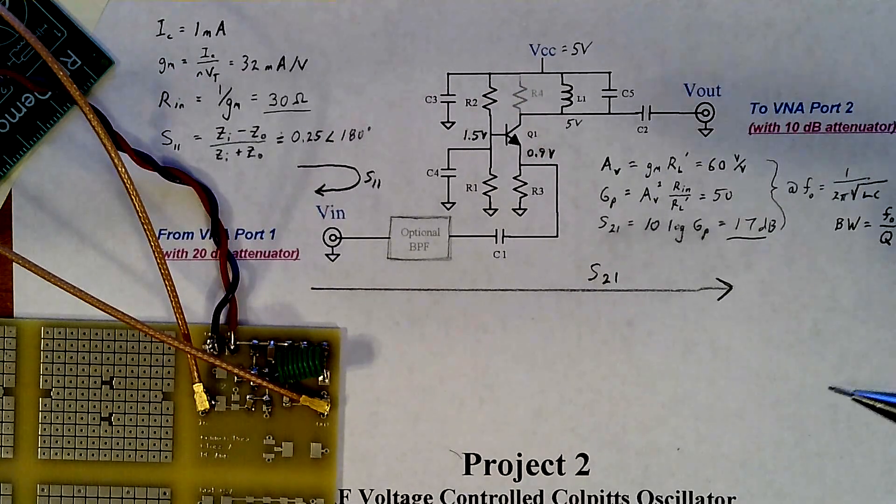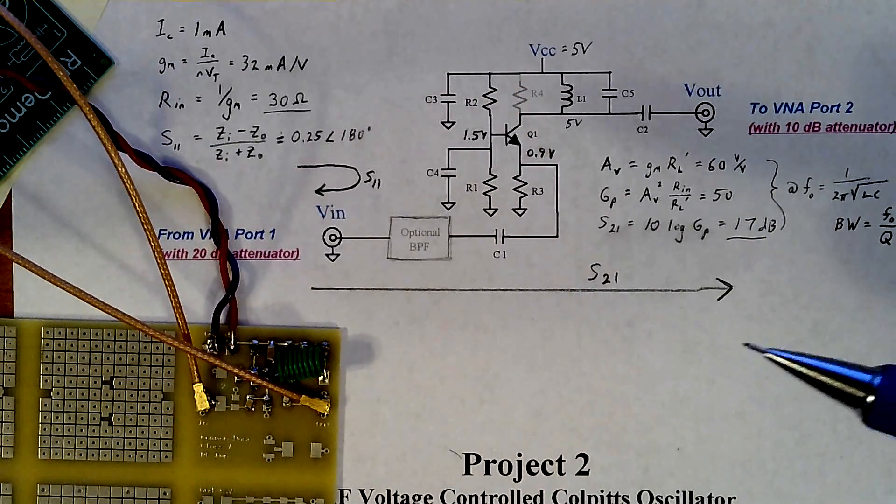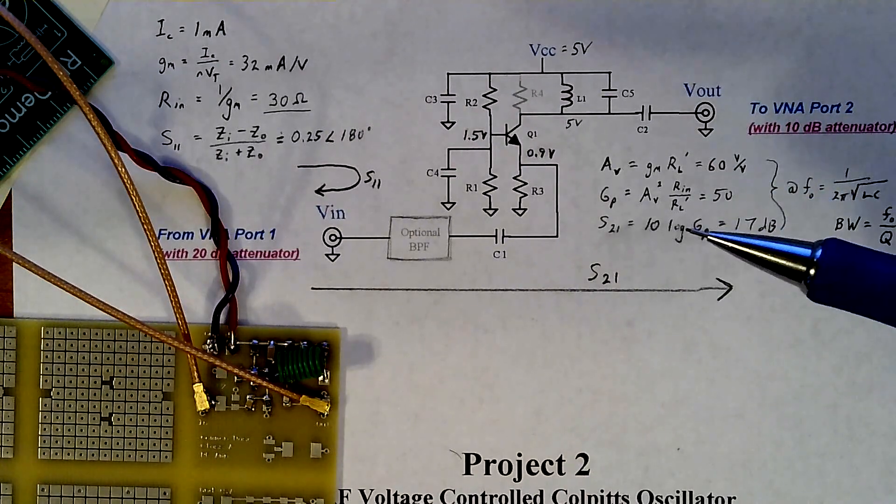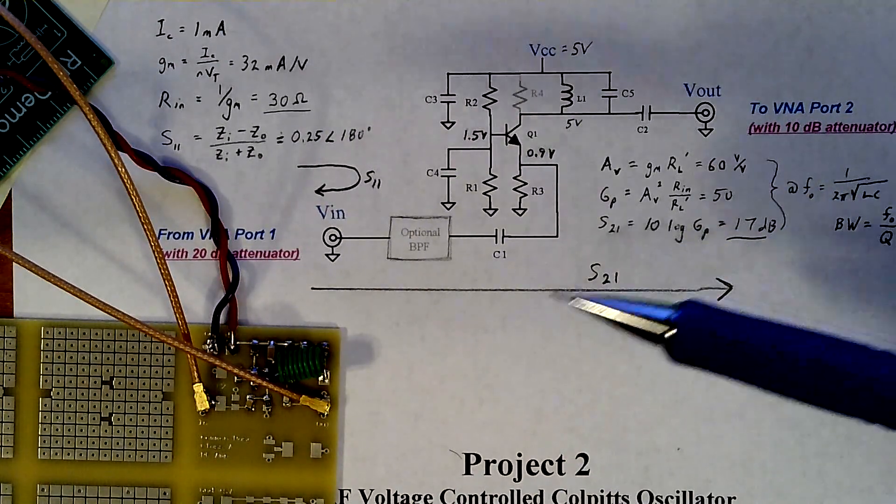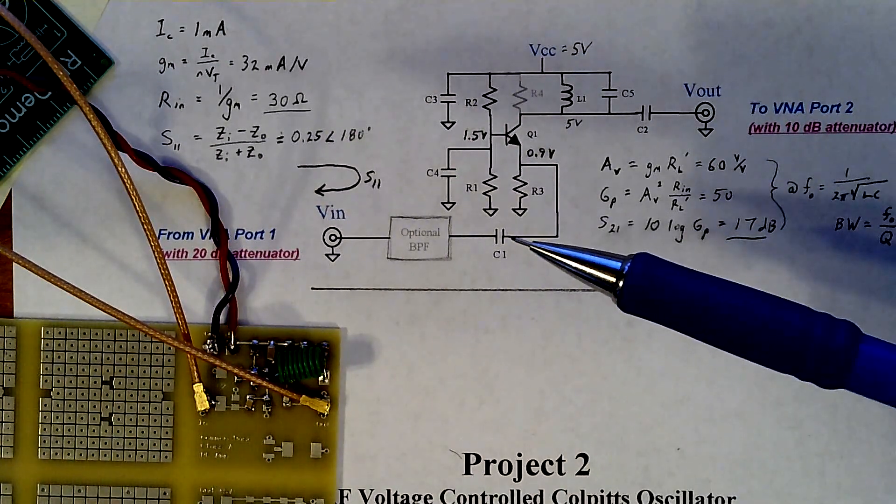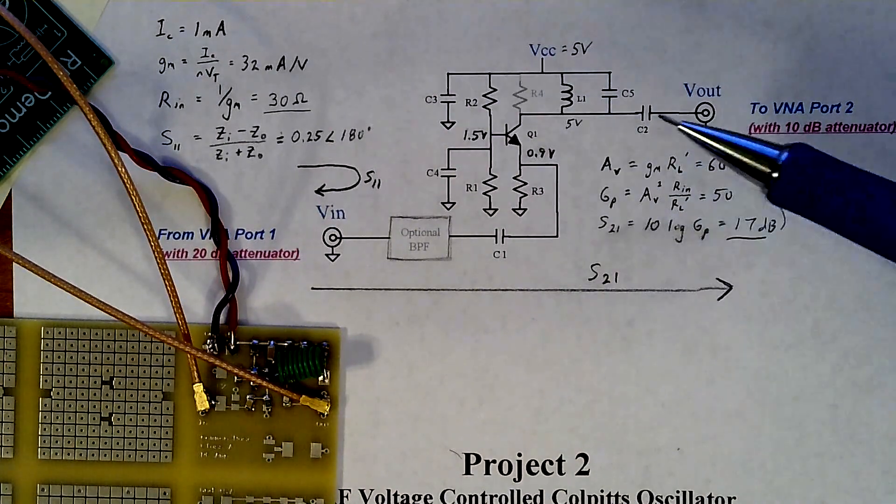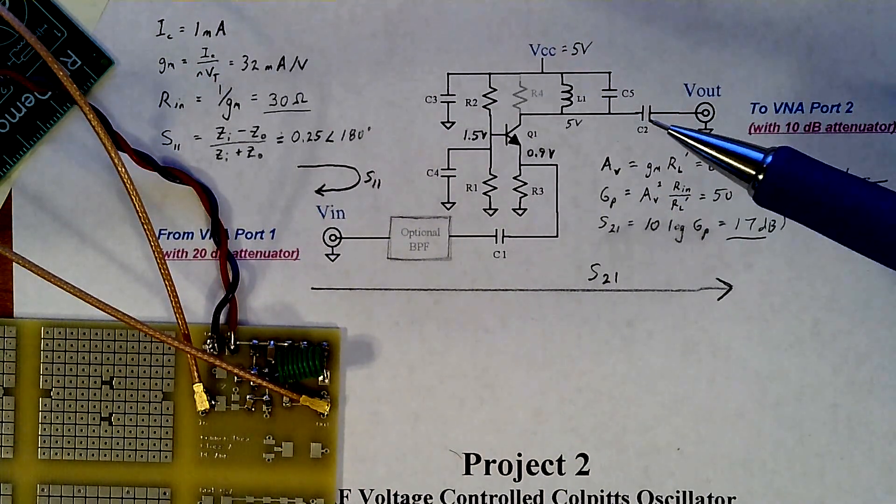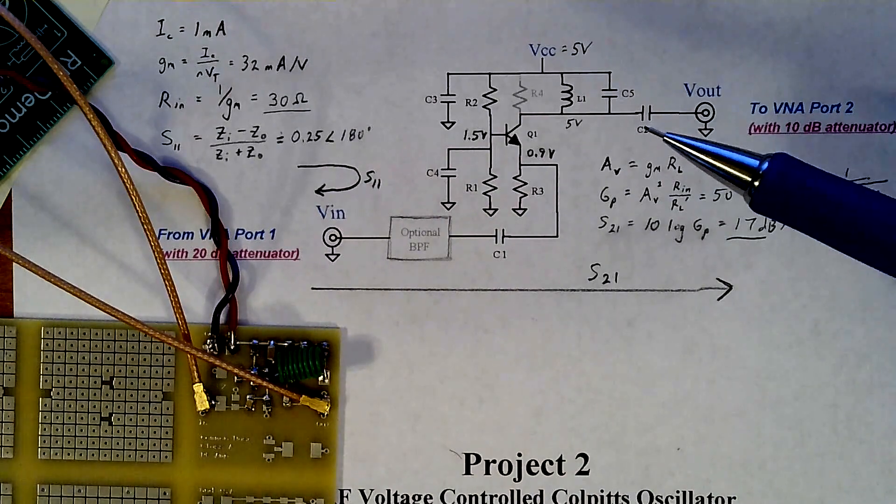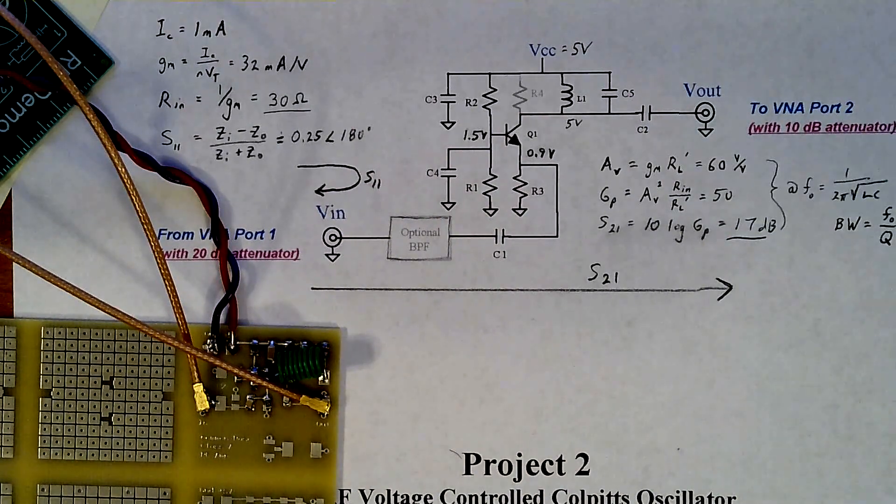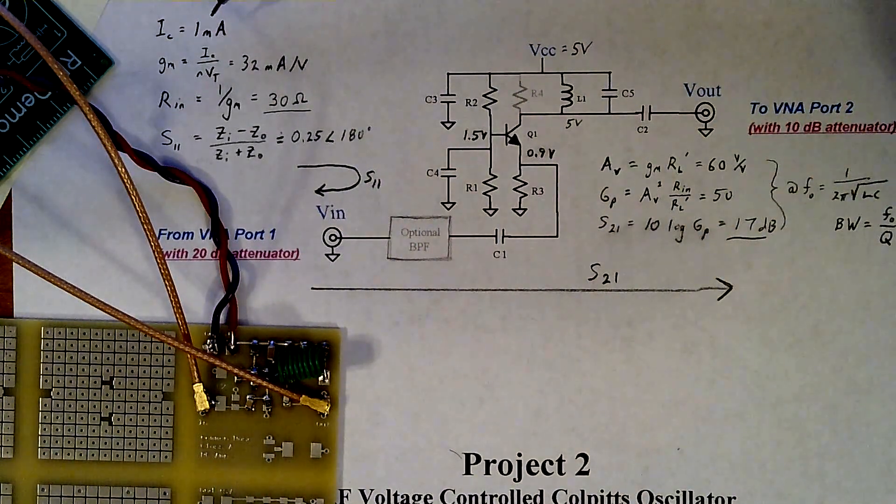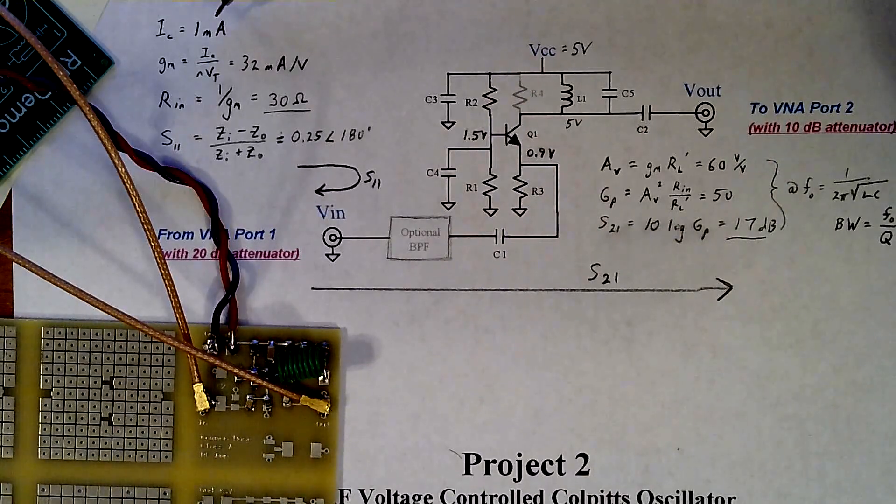On this little amp that I'm using for the demo today, I'm not using any DC blocks on the Nano VNA, because I have C1 on the input that blocks DC, C2 on the output that blocks DC, and also the power supply is set to just a few milliamps maximum output current, because this amp only draws about one or two milliamps total.